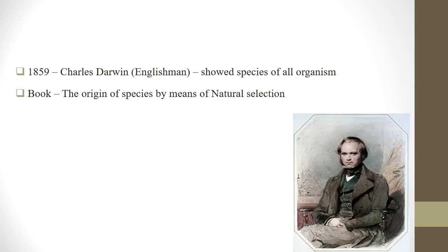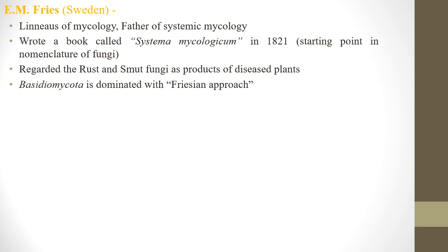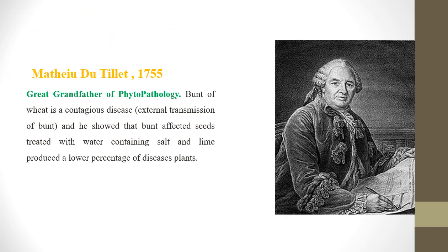Charles Darwin published 'On the Origin of Species by Means of Natural Selection,' one of the greatest scientific contributions. E.M. Fries, also a student of Linnaeus, is considered the 'Linnaeus of Mycology' or father of systematic mycology. He wrote 'Systema Mycologicum,' published in 1821 — a starting point for fungal nomenclature — and regarded rust and smut fungi as products of diseased plants.